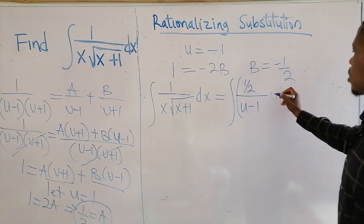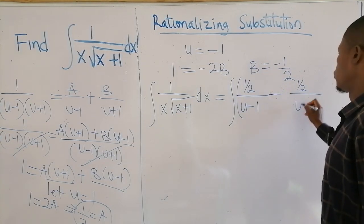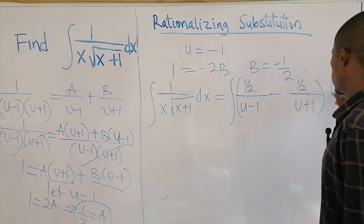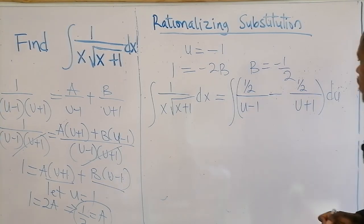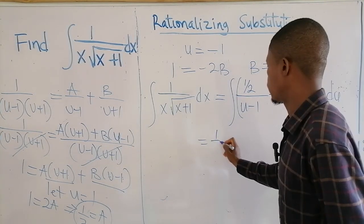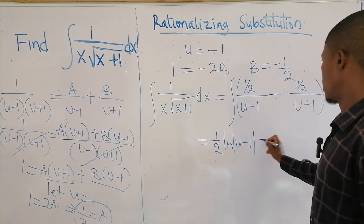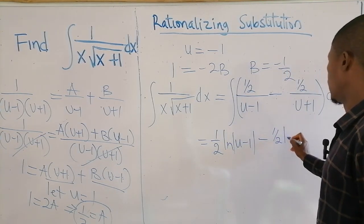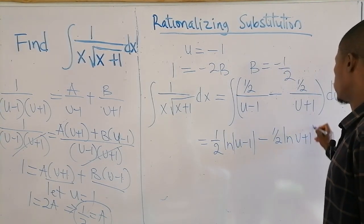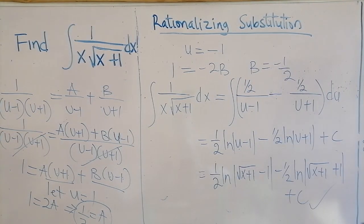B is minus 1/2, so that gives a minus sign on the second term: 1 over (u plus 1). Integrating, we get ln|u minus 1| minus ln|u plus 1| plus C. We can then substitute u back in terms of x to complete the answer.